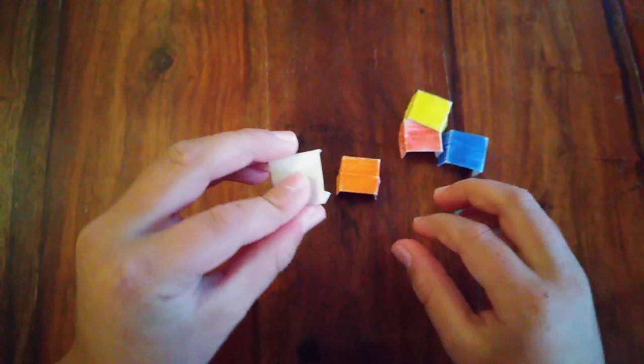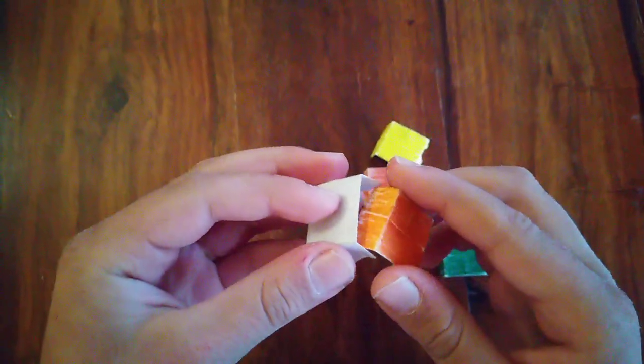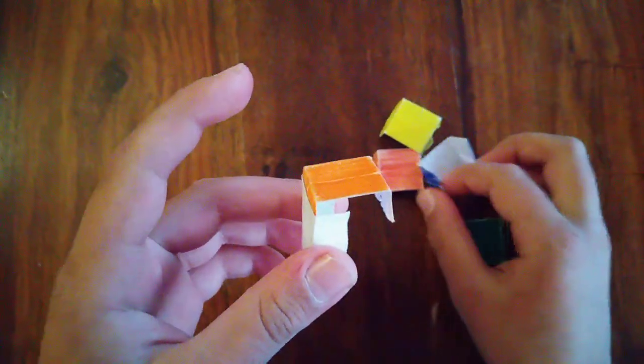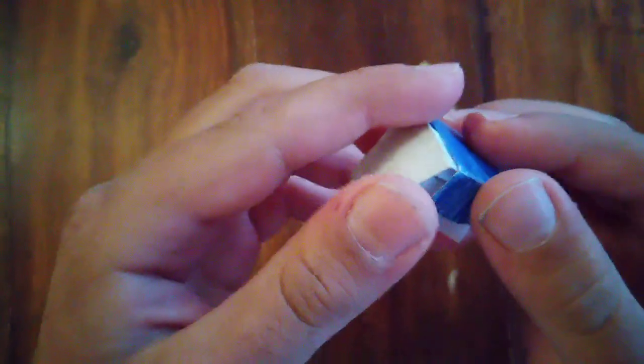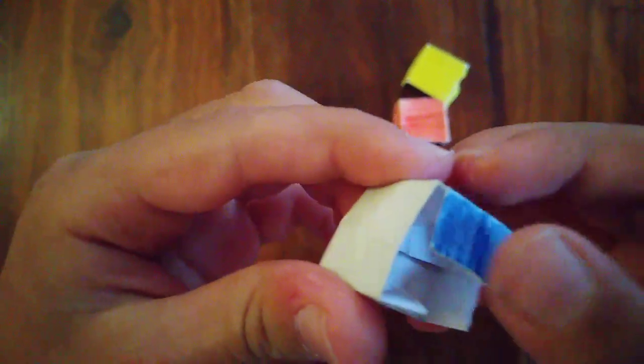We're going to start with the white piece, and we're going to put the orange piece in here. Then we're going to take the blue piece and put it in this spot.